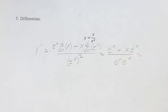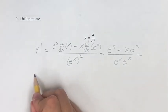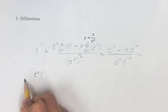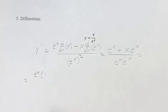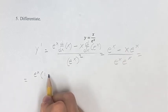This is the derivative, but we can simplify it. If you factor out e to the x from the first term, you're left with 1, and from the second term, you're left with minus x.